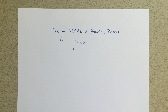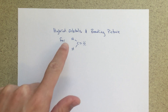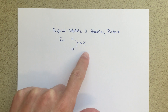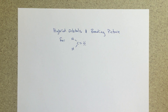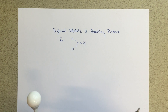Alright class, this is the video explaining the different hybridization we're going to see for this formaldehyde molecule — CH2 double bonded to O, called formaldehyde. We're going to be talking about the bonding picture, the hybridization, and the electron configurations, all that sort of fun stuff.